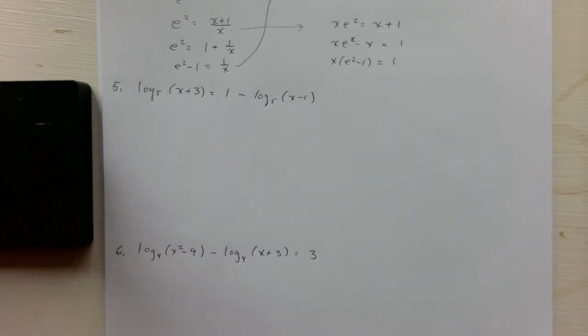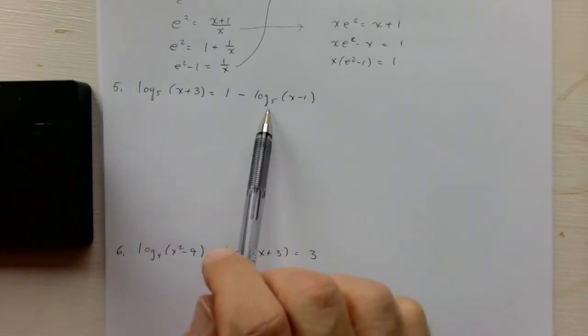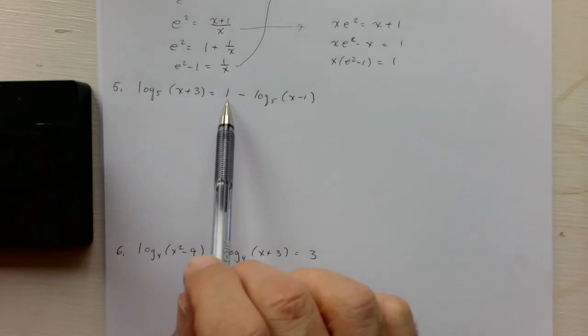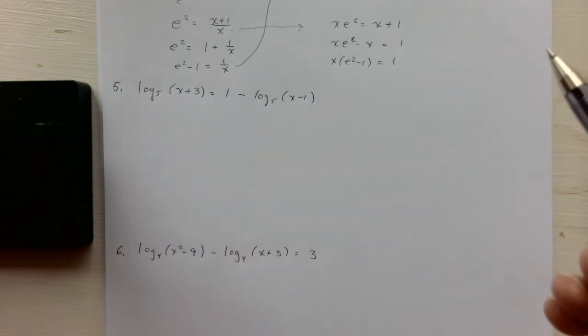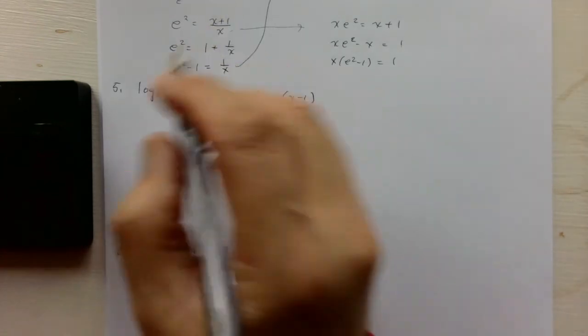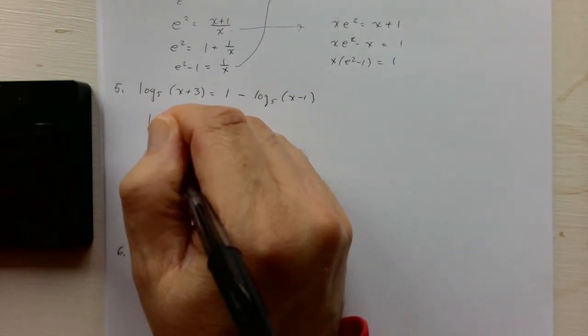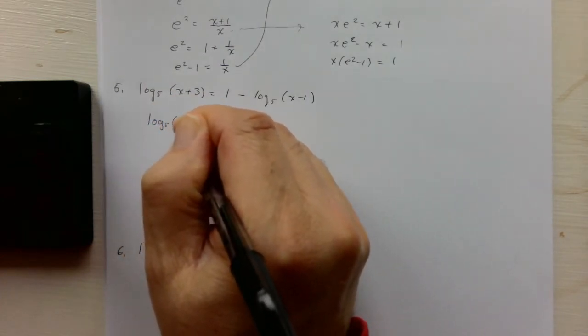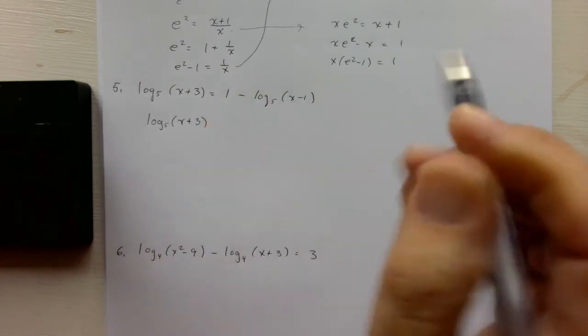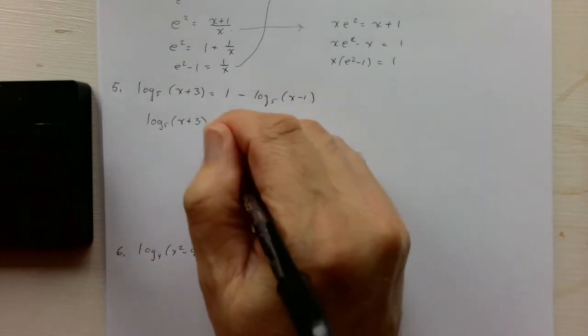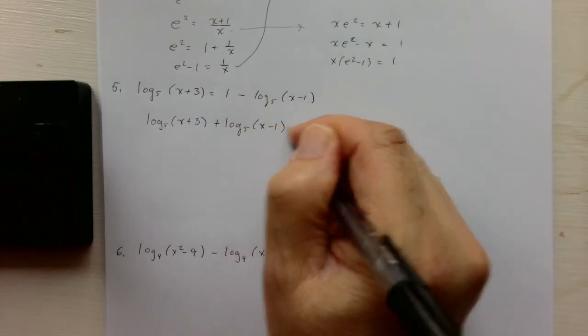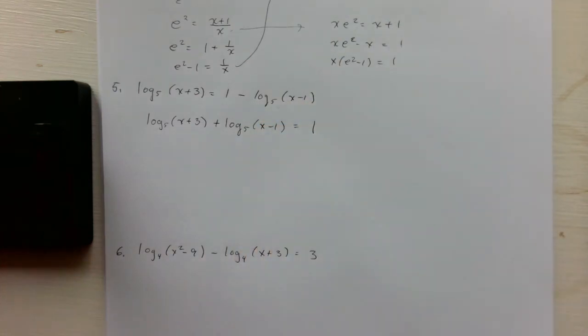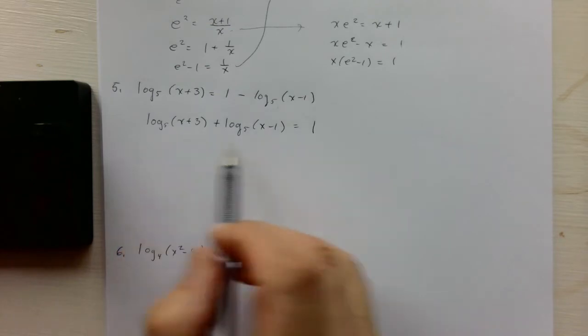For number 5, we can see that we have two logs and a 1. So because of this 1 here, we're going to have to write this as a single log equals 1, hopefully. So we have the log of x plus 3 base 5, and we're going to add this to both sides. And now we can combine both of these.